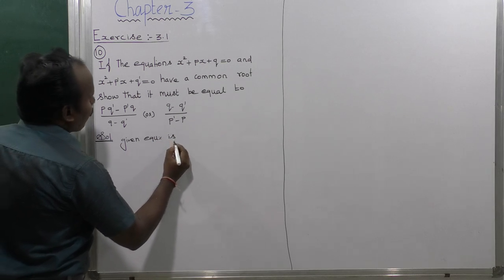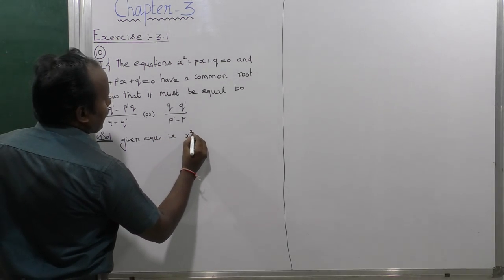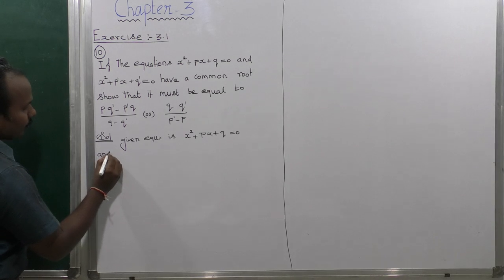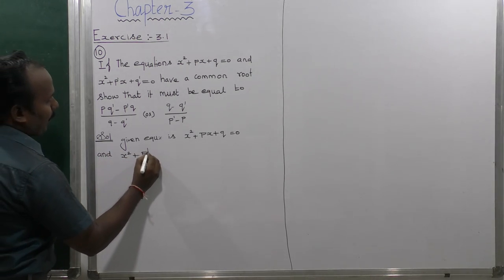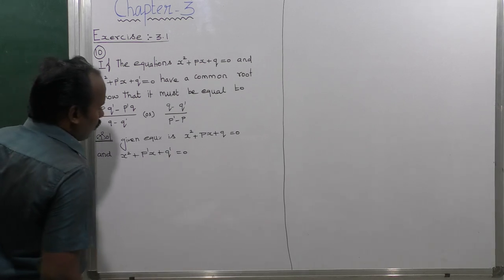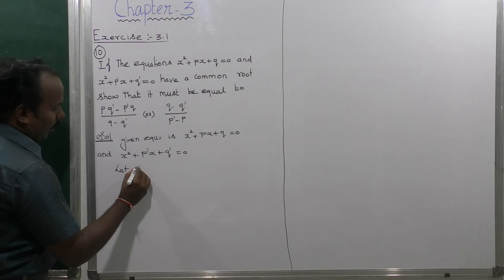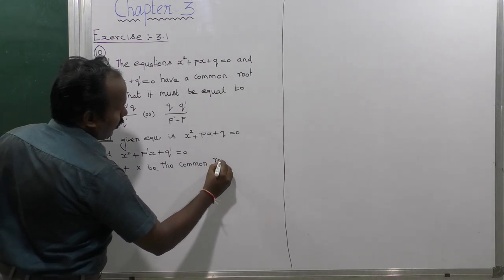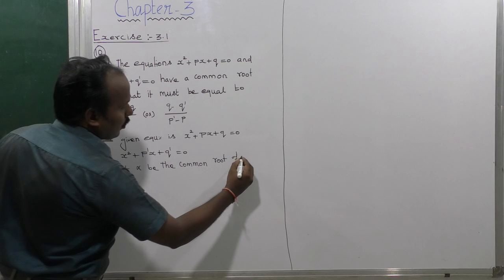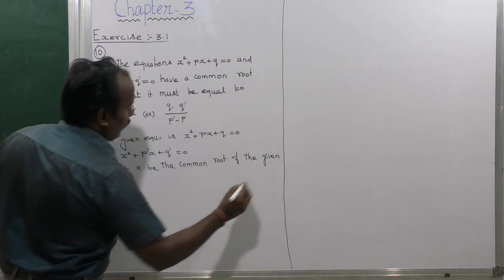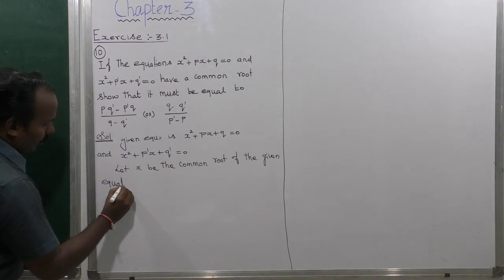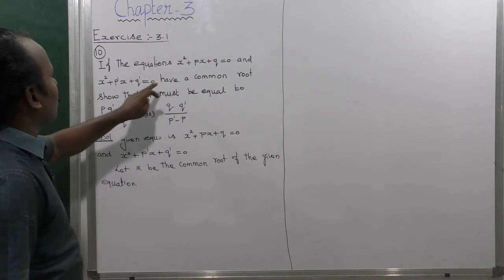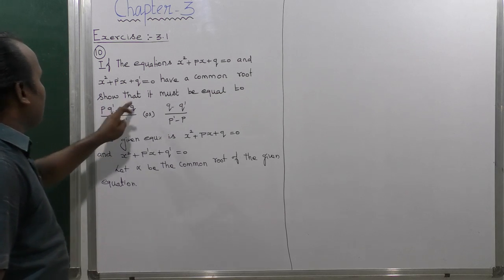The first given equation is x² + px + q = 0 and the second is x² + p'x + q' = 0. Let alpha be the common root of the given equations.